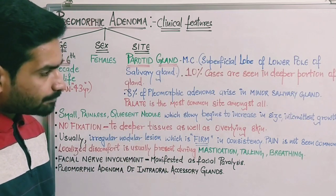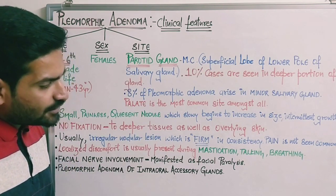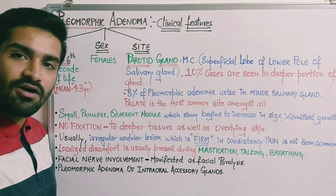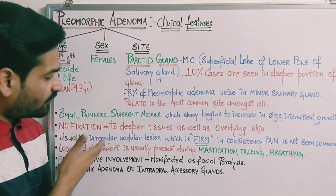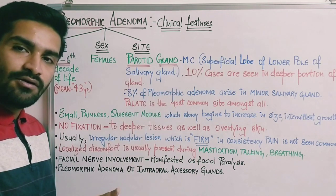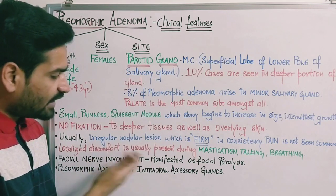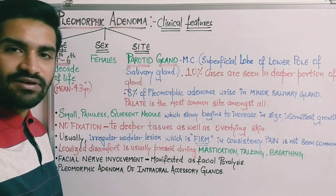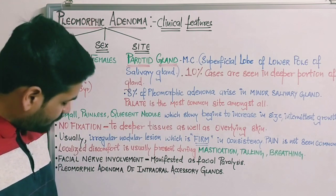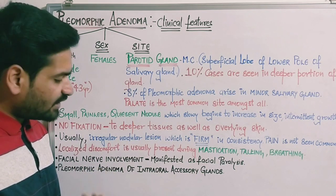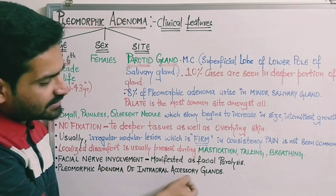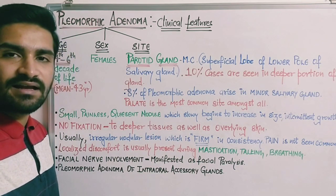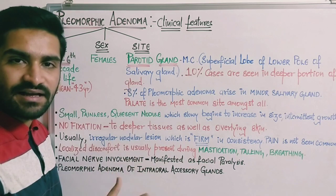Localized discomfort is usually present during mastication, talking, and breathing when the tumor occurs intraorally — in the palate or the deeper portions of the parotid gland — where it may occur on the lateral wall of the oropharynx. In such cases the patient may feel difficulty in these functions. If the tumor is on the outer parts, the patient generally will not feel any difficulty. If there is facial nerve involvement, there are chances the patient may have facial paralysis.